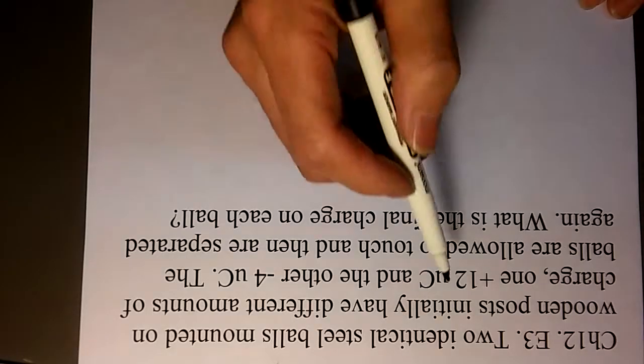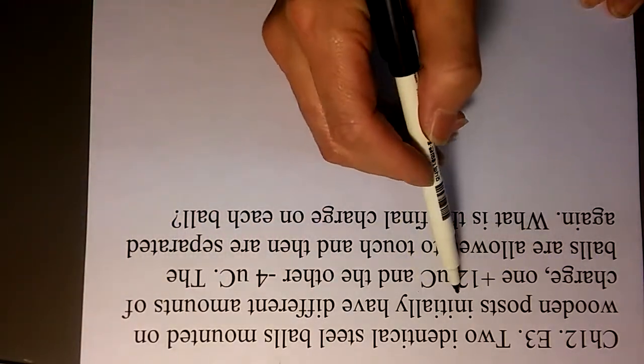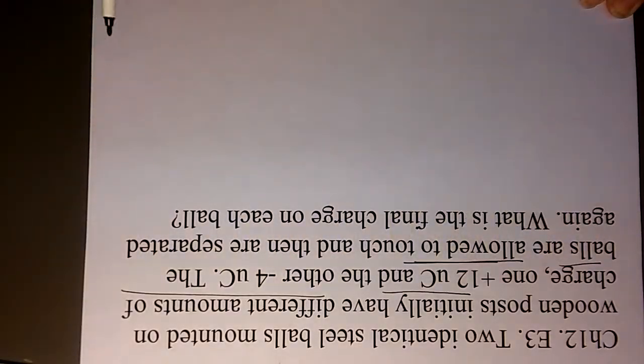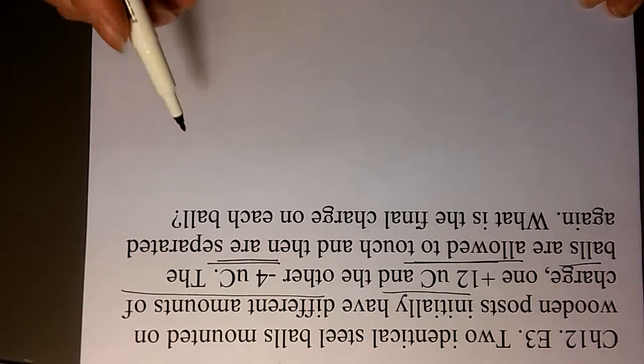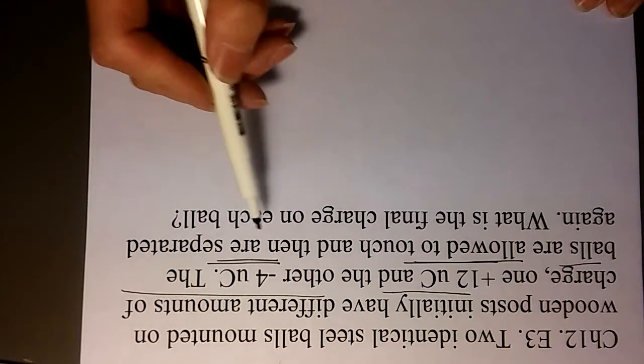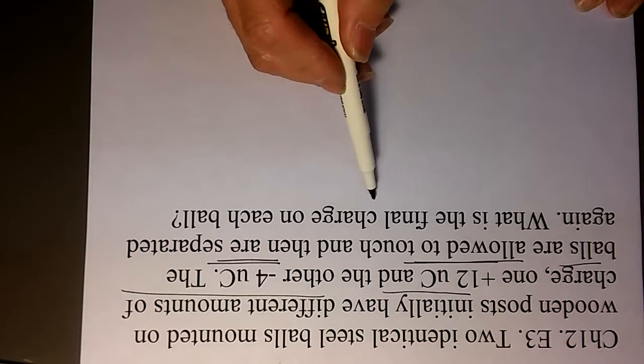Okay, let's solve Chapter 2, E3. Two identical steel balls mounted on wooden posts initially have different amounts of charge. One is positive 12 microcoulomb and the other one is negative 4 microcoulomb. The balls are allowed to touch and then they are separated again. What is the final charge on each ball?